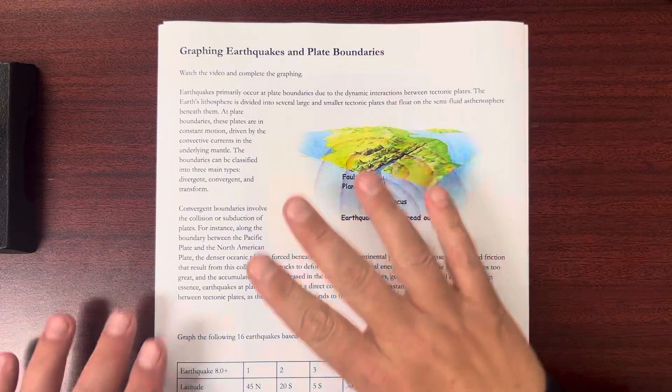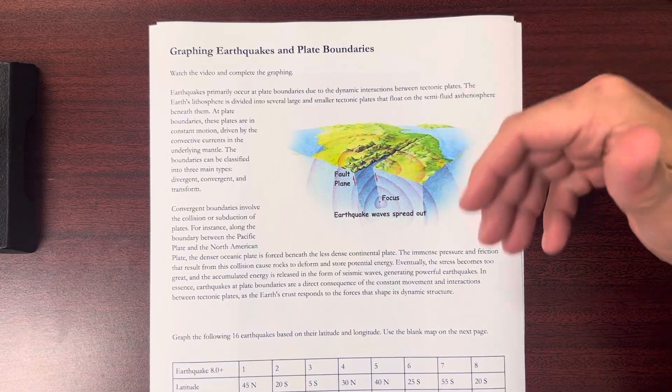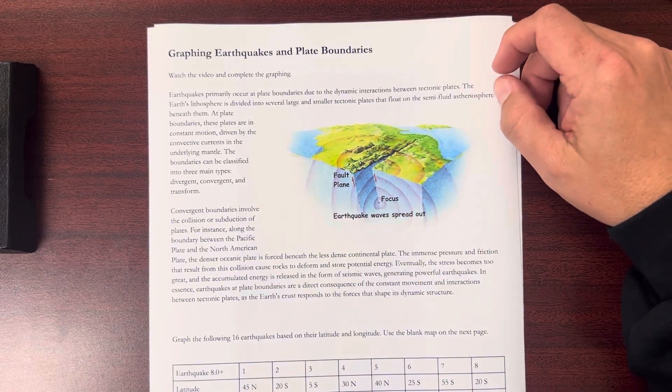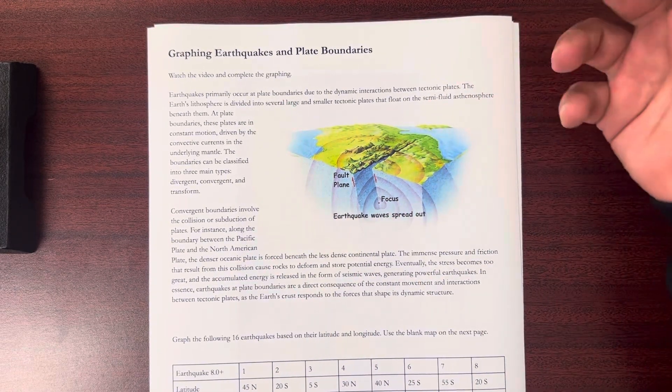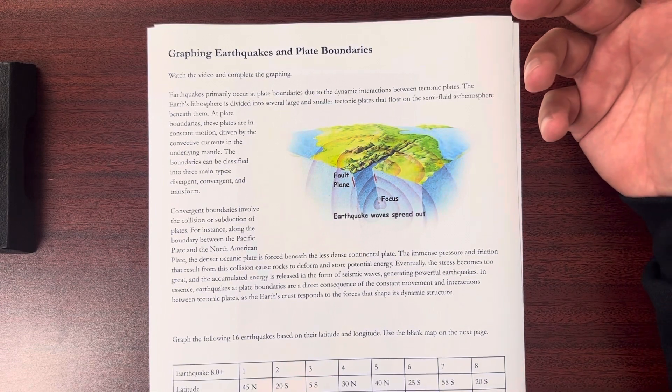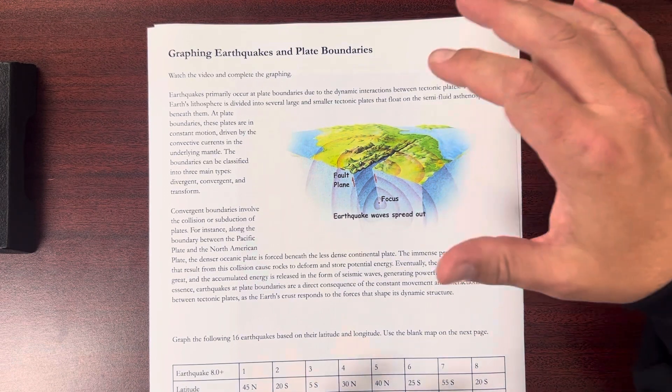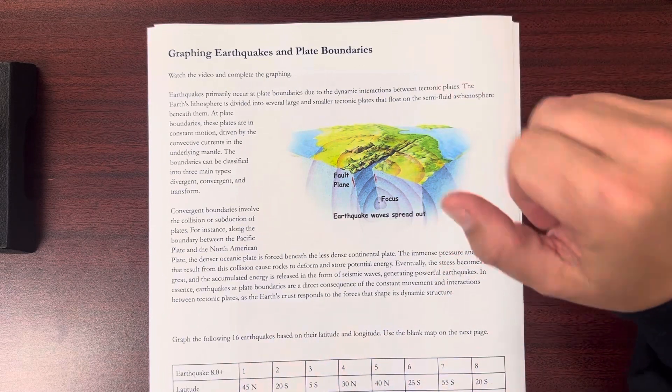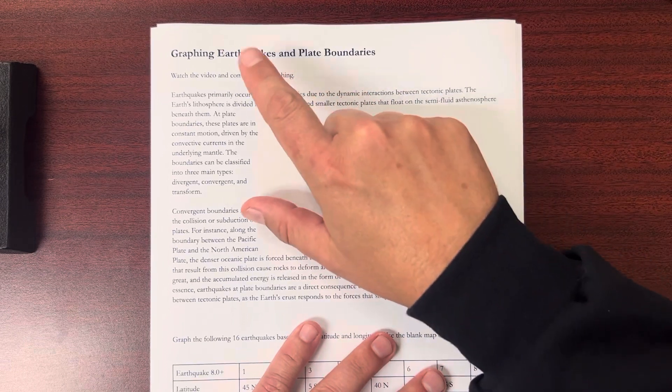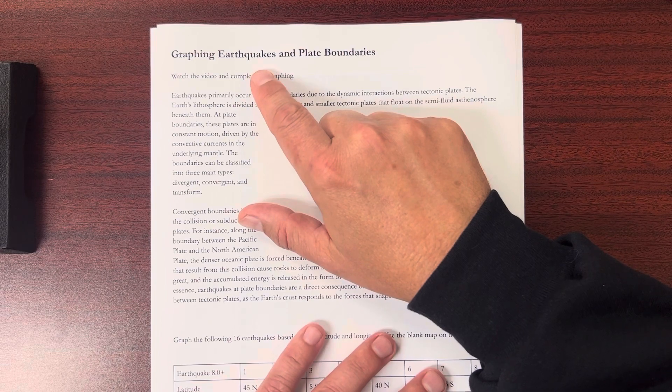Hello, I just want to quickly go over this worksheet, graphing earthquakes and plate boundaries. What we're doing here is looking at at least a few of the major earthquakes that have happened over the last 15 to 20 years and marking on a map where they occurred. We're going to see a relationship between plate boundaries and most earthquakes that are of any significant magnitude.